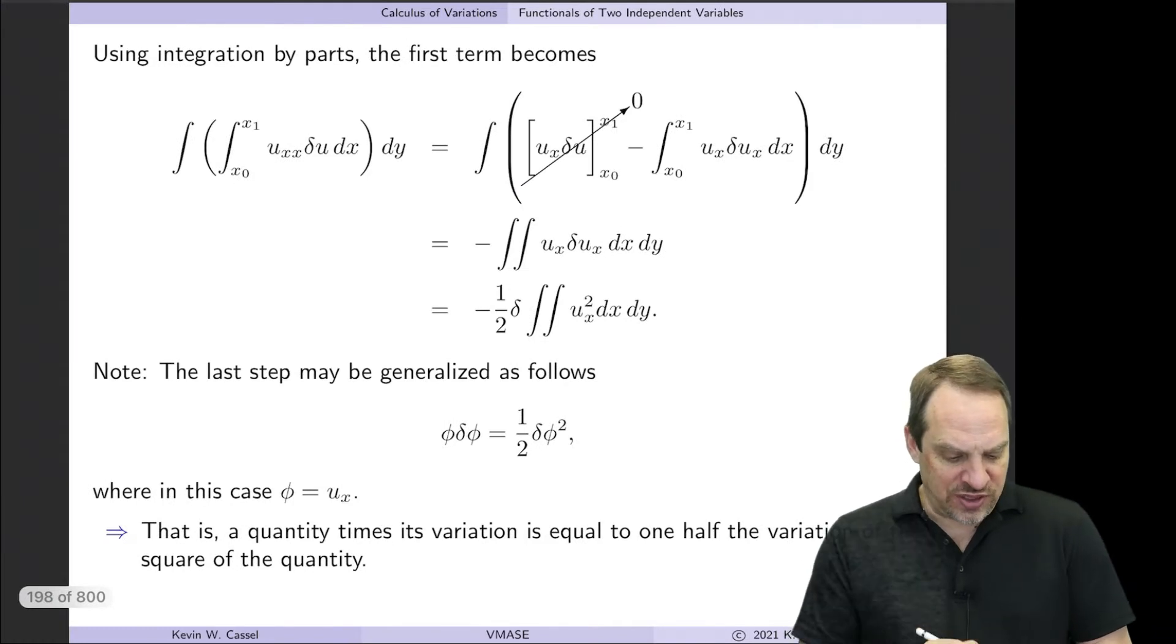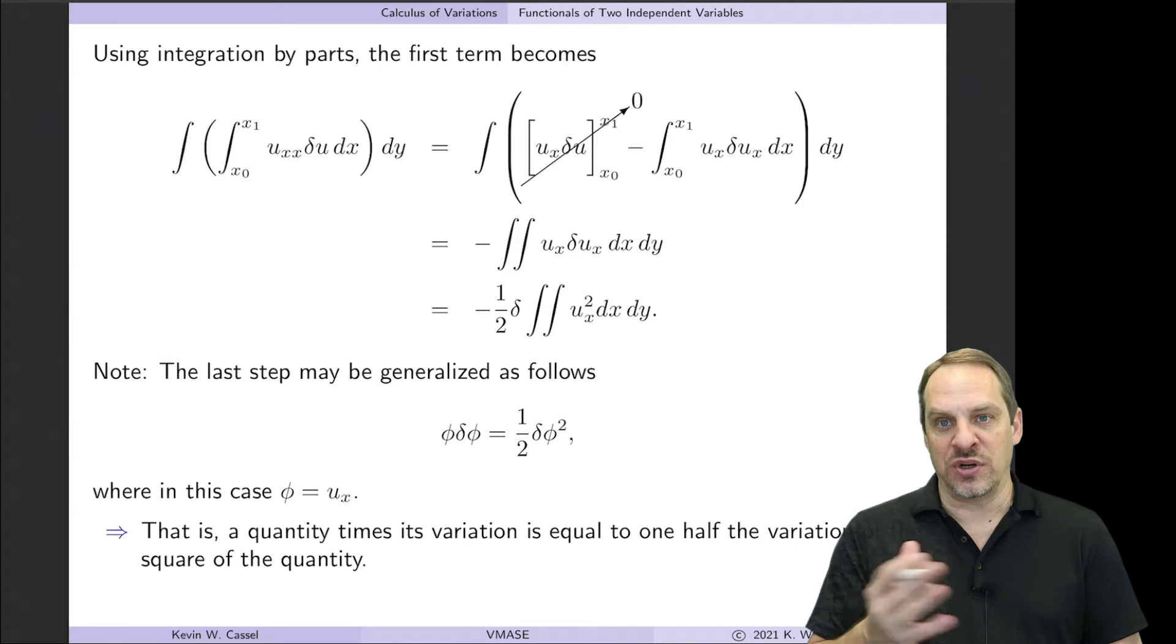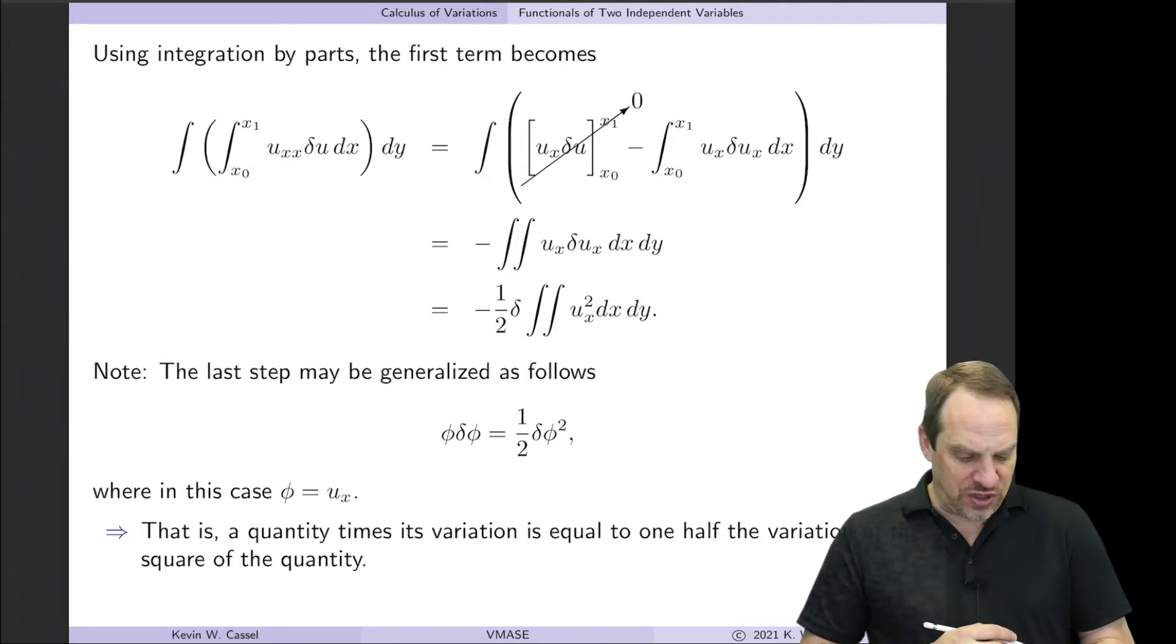Okay, so let's take the Uxx term, so ∂²u/∂x² term. And that's integrated with respect to x and y. You'll notice I've put the x derivative inside and the y derivative outside, because it's derivatives with respect to x, so we're going to do integration by parts in the x direction.